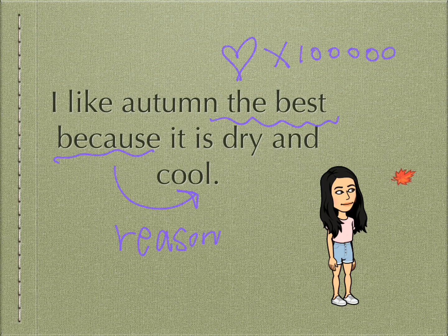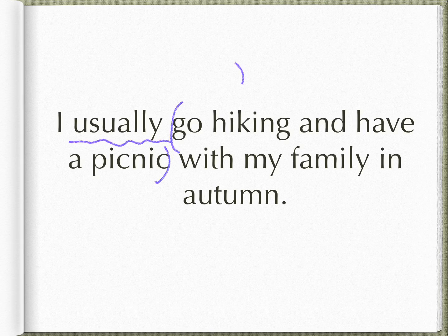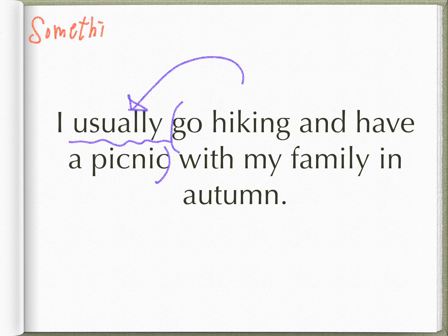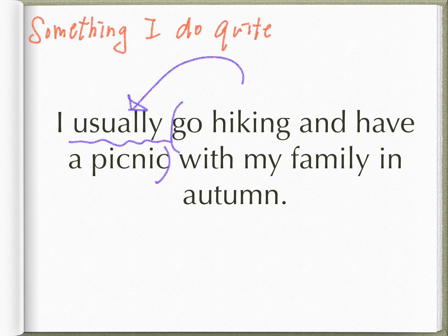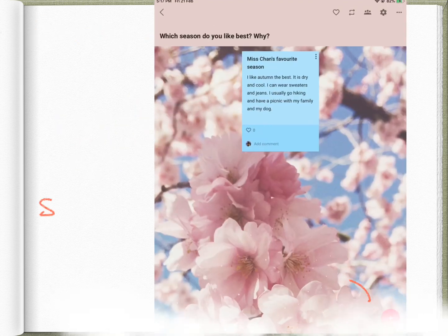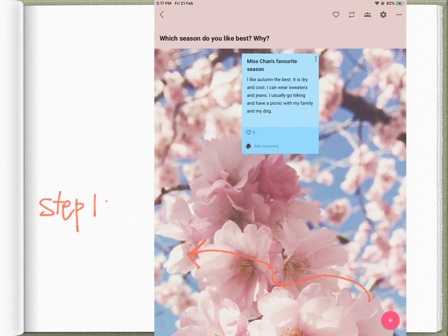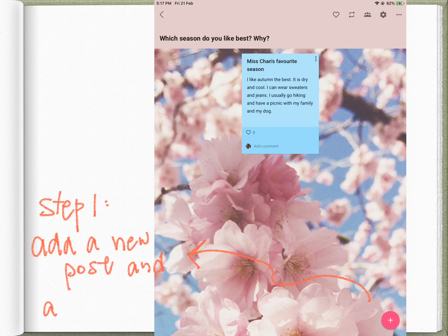There is another reason why I like autumn the best: because I get to spend time with my family. I usually go hiking and have a picnic with my family in autumn. I use 'usually' in this sentence, meaning going on a hike and having a picnic are things I do quite a lot in autumn.